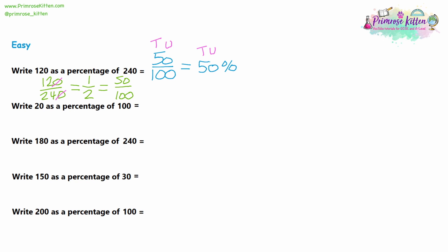Let's do the same thing with question 2. We're going to write 20 as a percentage of 100, so 20 as the numerator and 100 as the denominator. This is already out of 100, so we can move straight to step 2. We've got 20 over 100, and this is going to be 20%. As long as the fraction is out of 100, the numerator is just going to be your percentage. So 20 is 20% of 100.